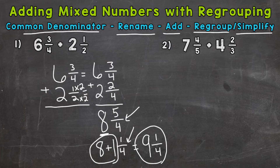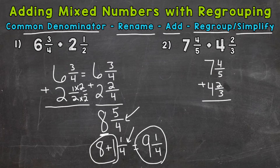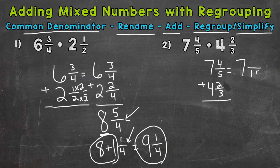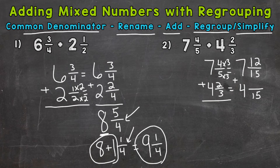Let's do another example — number two, where we have seven and four-fifths plus four and two-thirds. Let's line these mixed numbers up. We need a common denominator to add our fractions. Five and three are our denominators — they are not the same, so we need the least common denominator for five and three, which is 15. Let's rename: seven and how many-fifteenths plus four and how many-fifteenths. Five times three is 15, so four times three gives us 12. Three times five gives us a denominator of 15, and two times five is 10. Now we're ready to add.